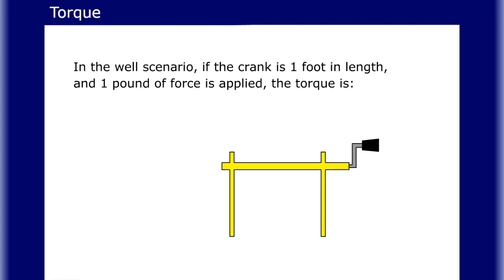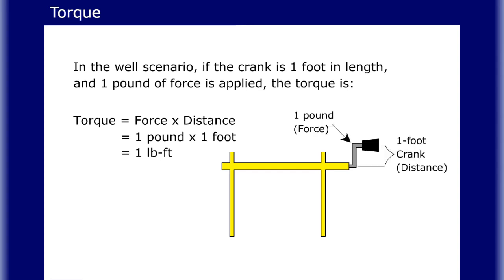In the well scenario, if the crank is one foot in length and one pound of force is applied, the torque is one pound-foot. As we see here, torque equals force times distance, so torque equals one pound times one foot, which equals one pound-foot.